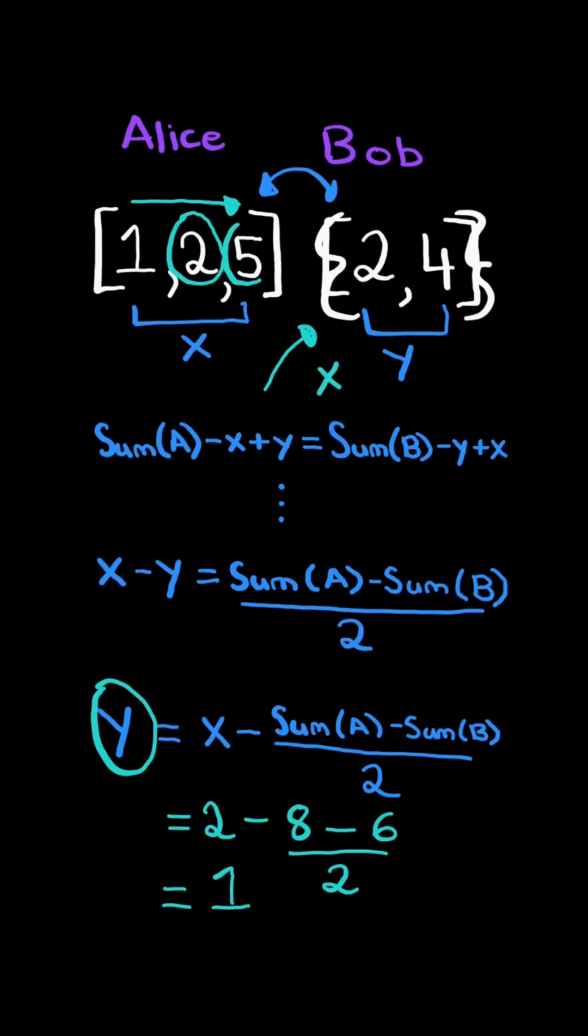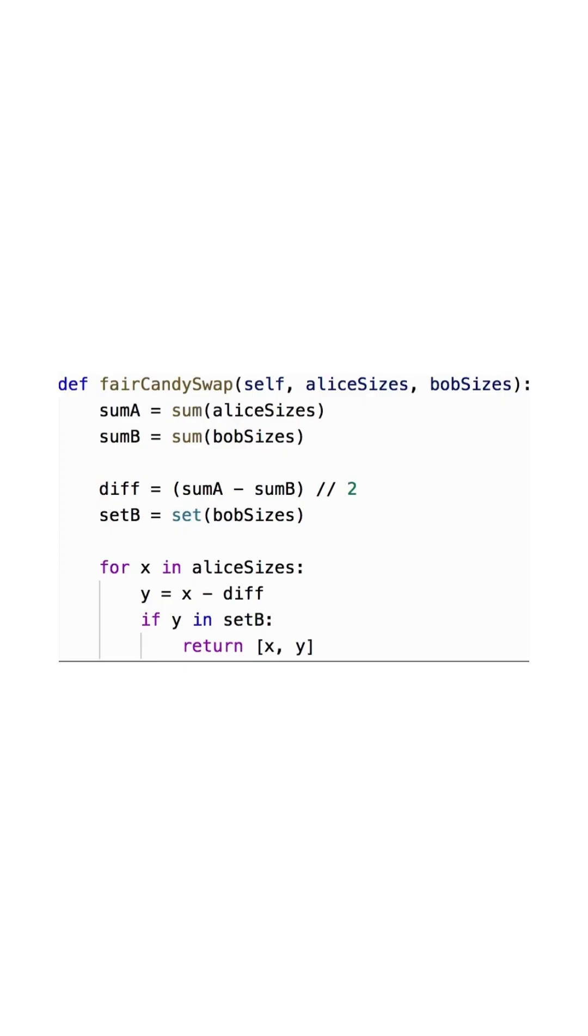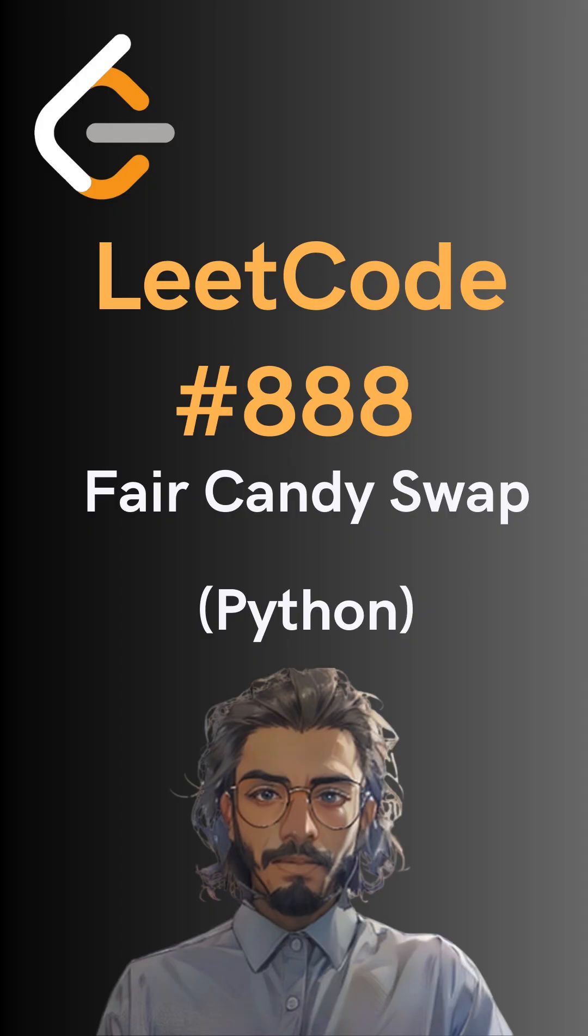So we continue and check the next element in Alice's list. We calculate the equation for Y. It equals 4. And we check if 4 is in Bob's set. In this case, it is. And so finally, we found two numbers we need to swap to have the same number of total candies. And here's the code to do so. Please like and follow for more.